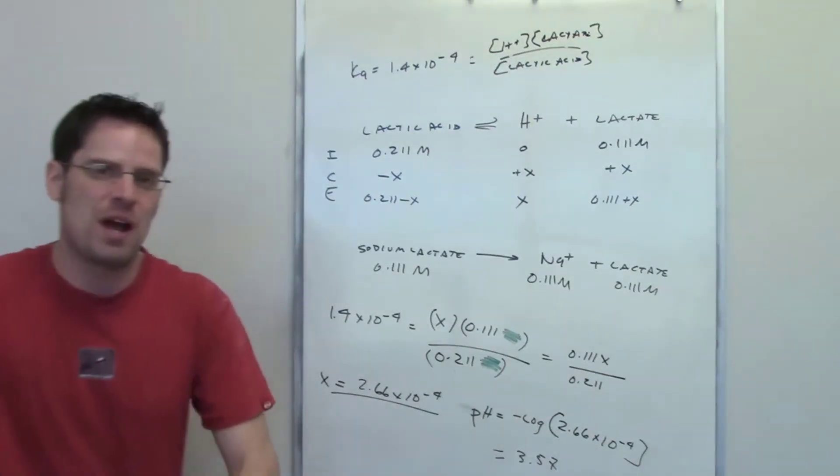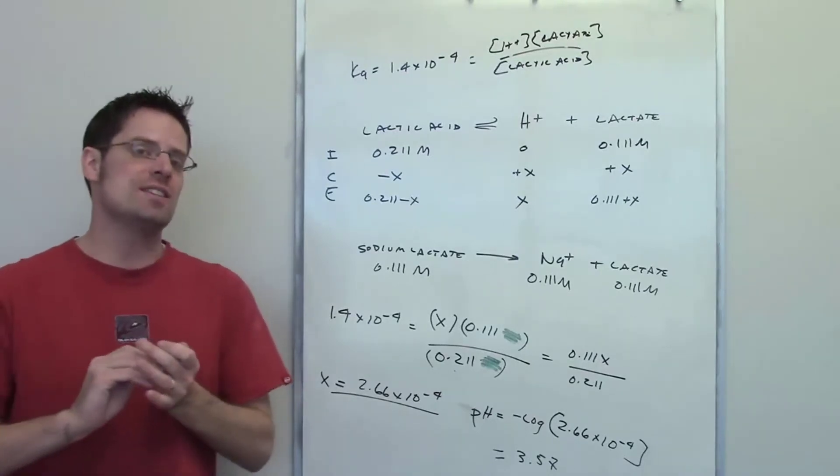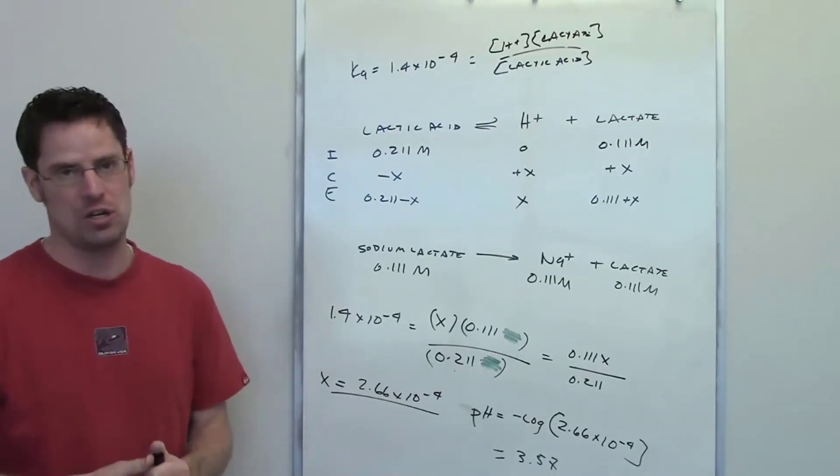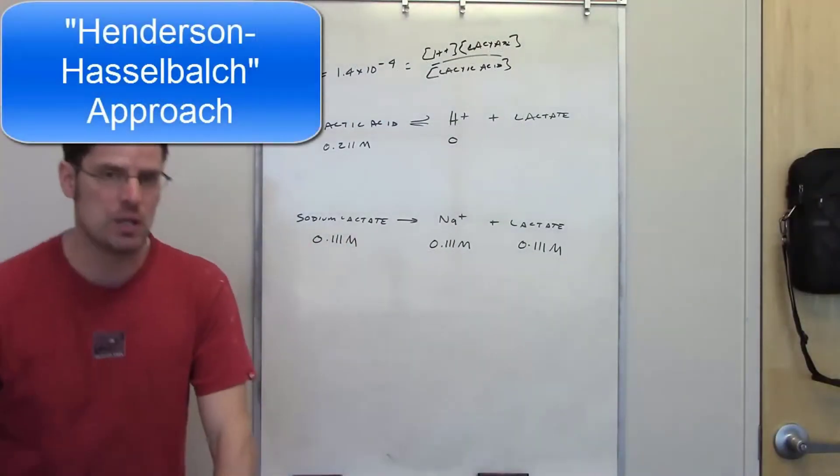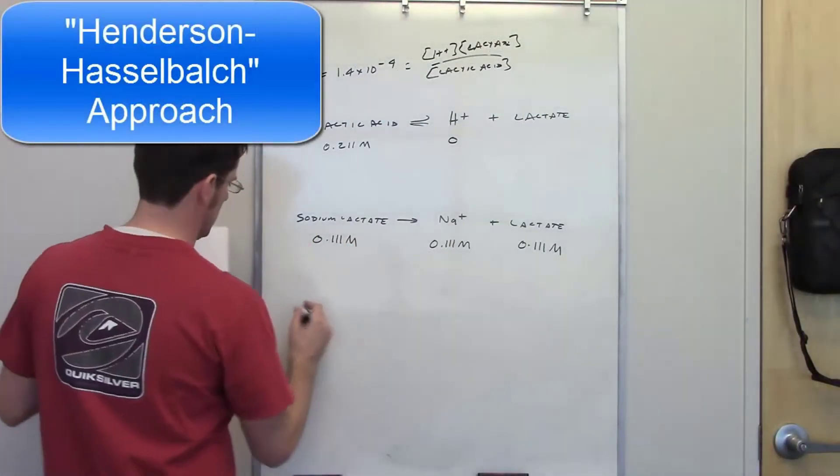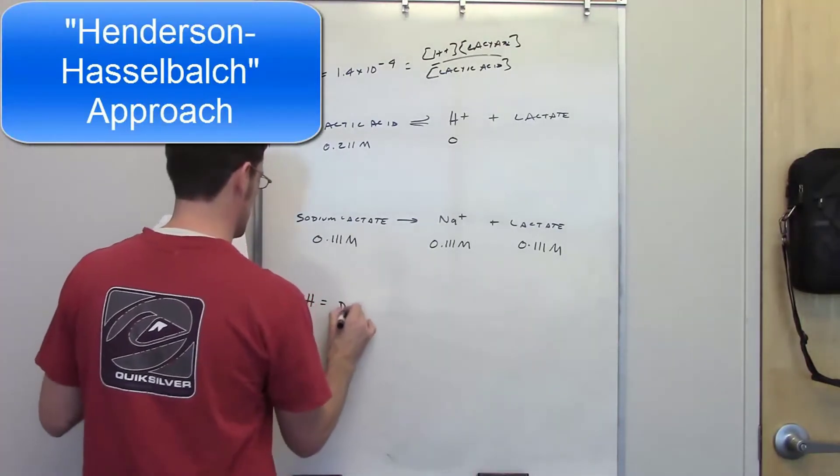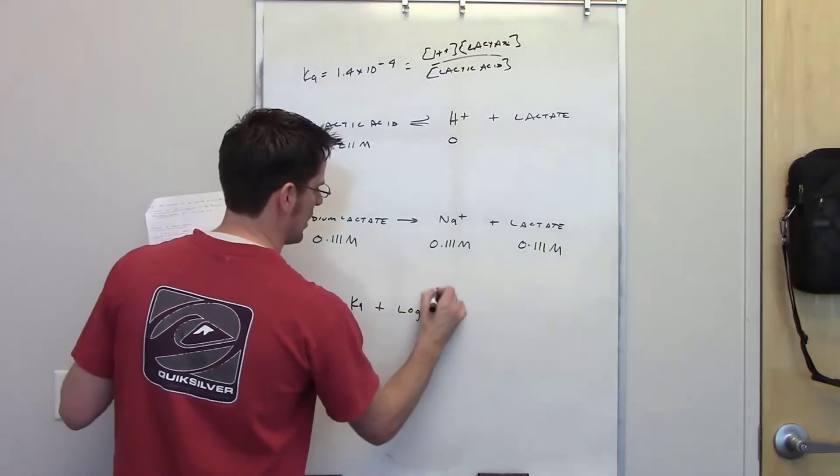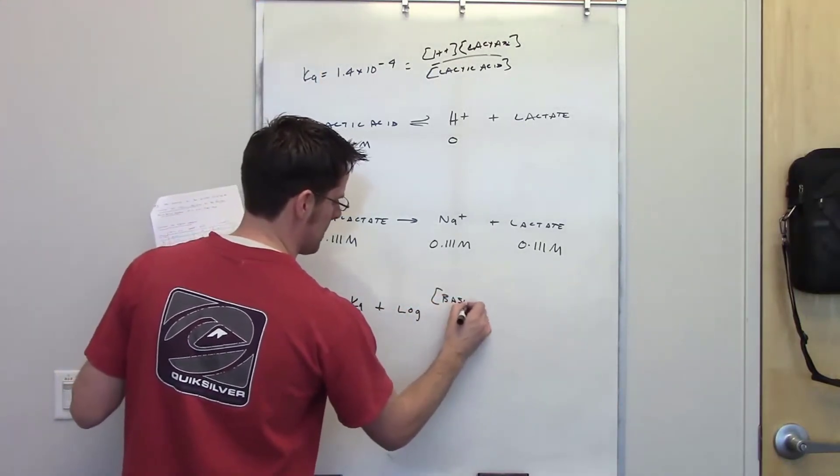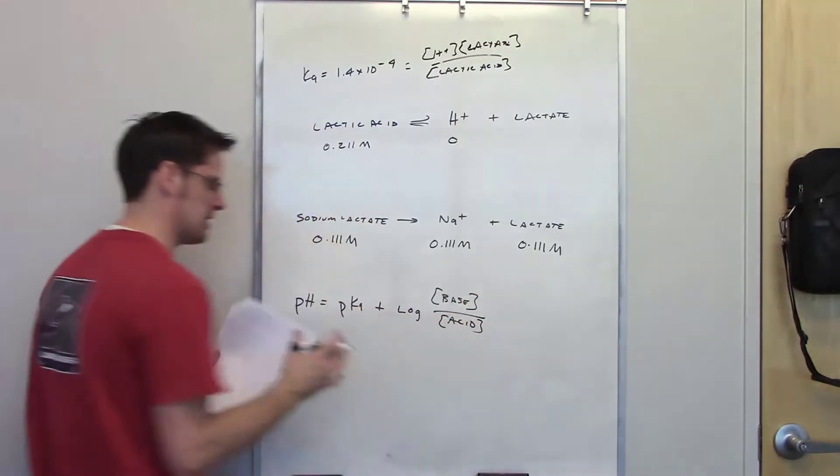I want you to catch your breath for a moment. I'll now show you in just a second how to solve the same problem using the Henderson-Hasselbalch equation, which you'll notice is much easier. Here's the Henderson-Hasselbalch approach. The Henderson-Hasselbalch equation says that the pH at equilibrium is going to be equal to the pKa plus the log of the conjugate base concentration divided by the conjugate acid concentration.